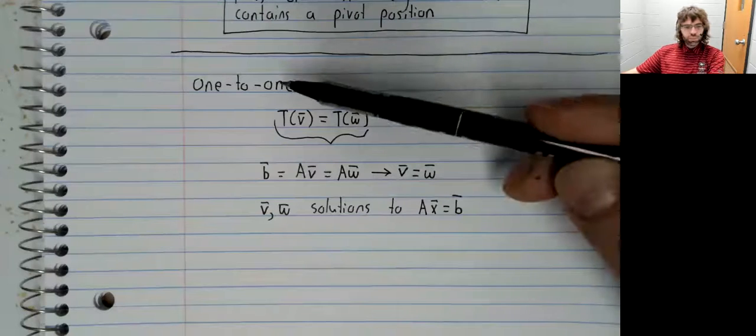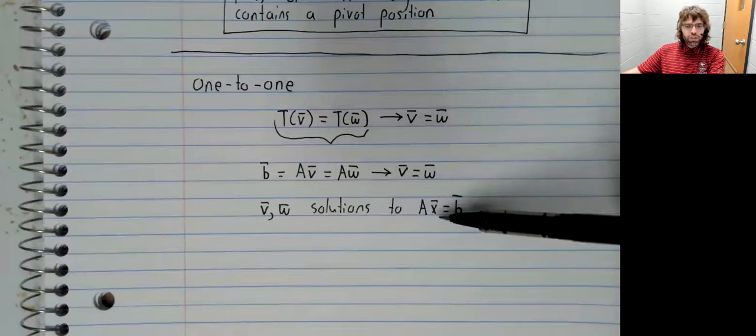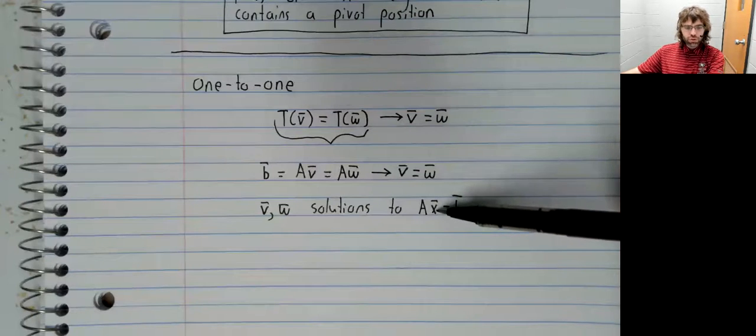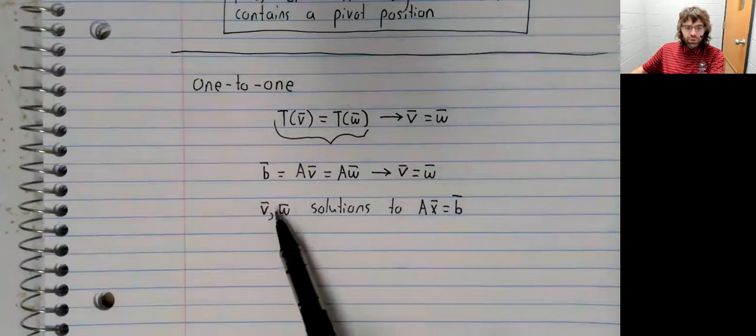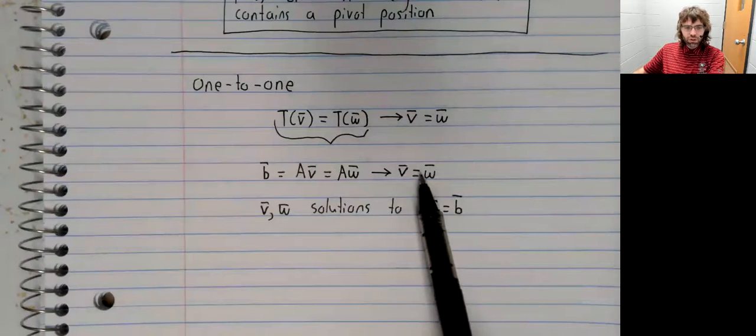And this is one to one if this matrix equation only has one solution. So there being solutions makes them the same vector.